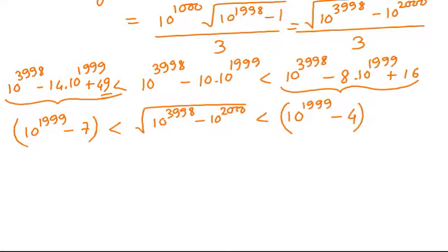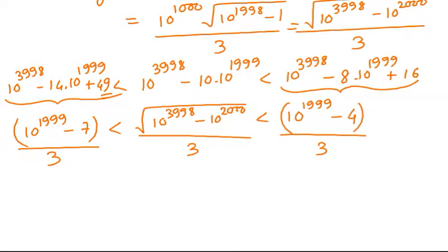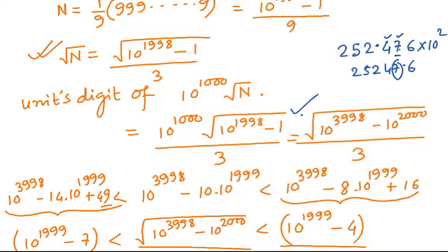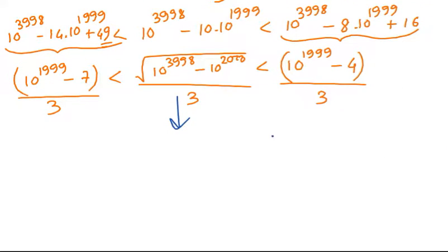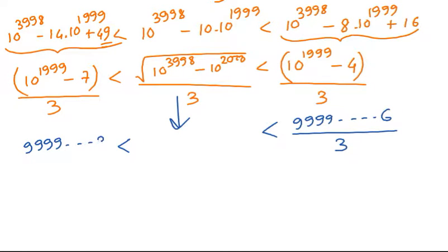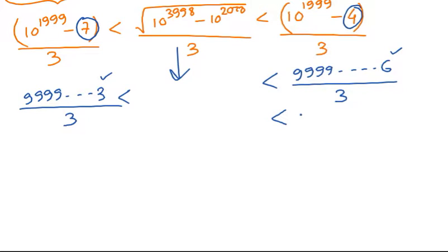On dividing by 3 we get a bound for our number. The upper limit is of the form 999...96 divided by 3 — last digit 6 divided by 3 — and the lower limit is 999...93 divided by 3, since we subtracted 7 (last digit 3). So on dividing by 3, the upper limit ends in ...2 and the lower limit ends in ...1.